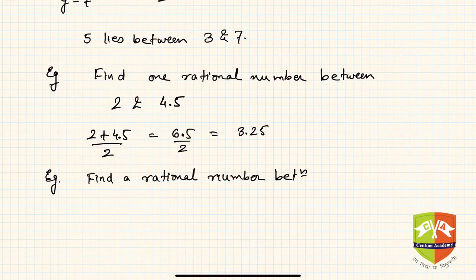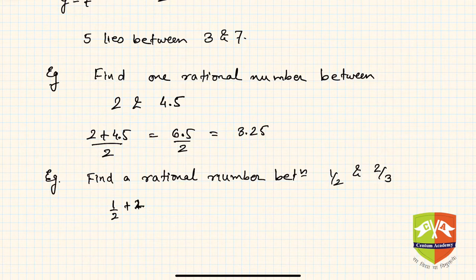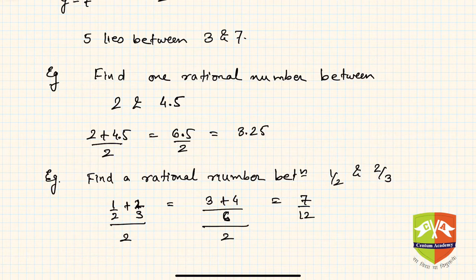Another example — this time not in decimal form but in fraction form: find a rational number between 1/2 and 2/3. First, ascertain which is lesser and which is greater. That number is (1/2 + 2/3) divided by 2. The LCM of 2 and 3 is 6, so the numerator becomes 3 plus 4 by 6, giving 7/6, divided by 2 — which is 7 upon 12. So 7/12 lies between 1/2 and 2/3.